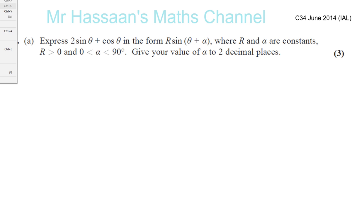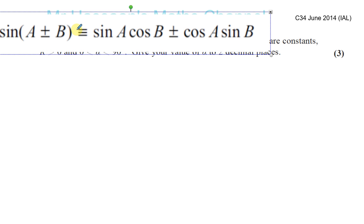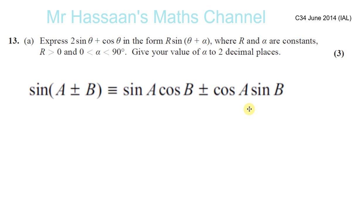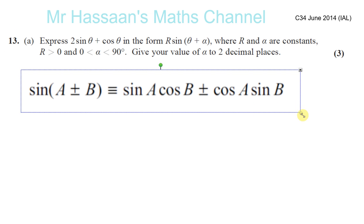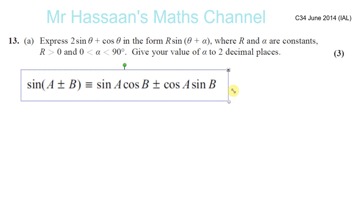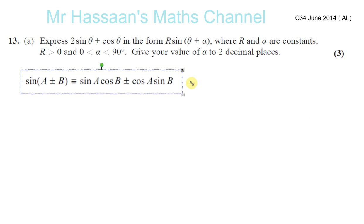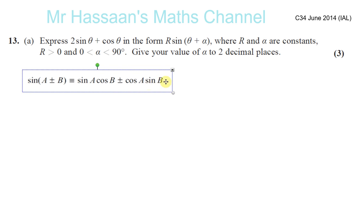This is the form we're going to look at — the one with the plus. So: sine(A + B) equals sine A cosine B plus cosine A sine B.